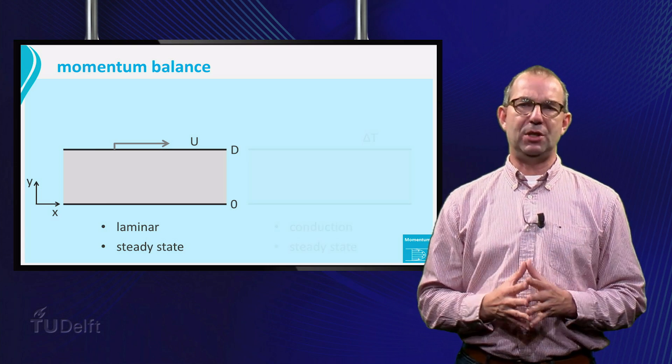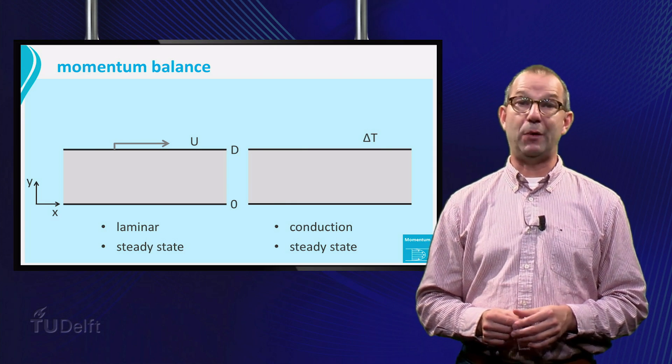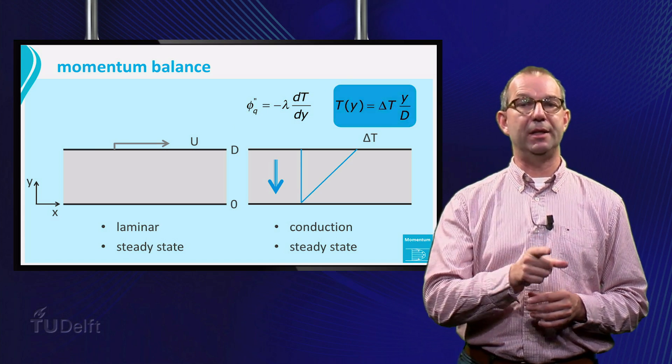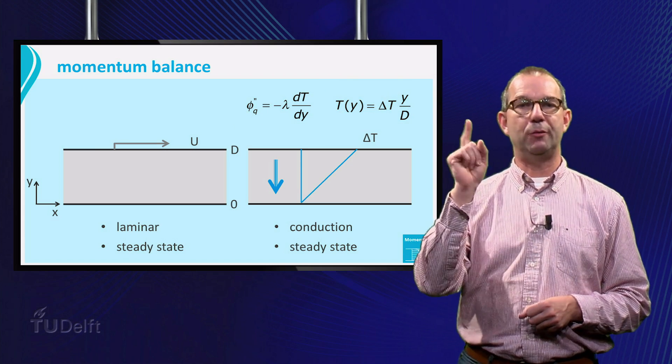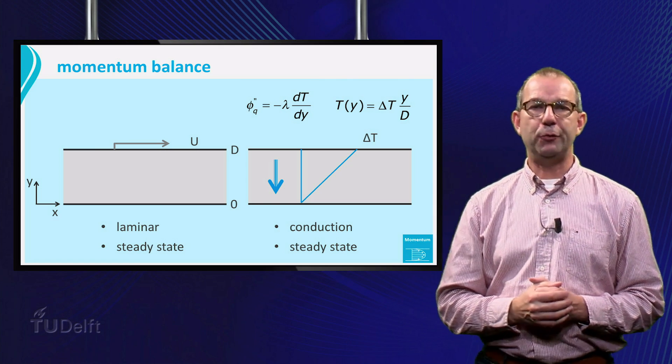We can make an analogy with heat conduction through a slab of material. Here we found, using Fourier's law, that the temperature profile is linear. Heat is flowing from the hot top side to the cold bottom.